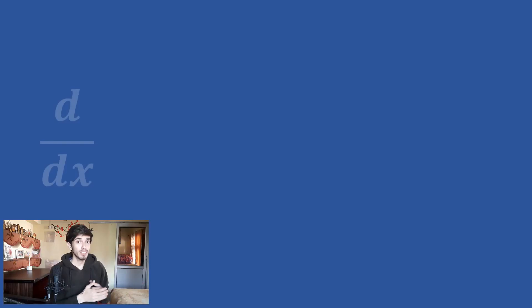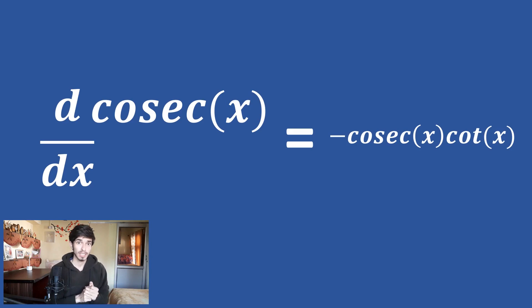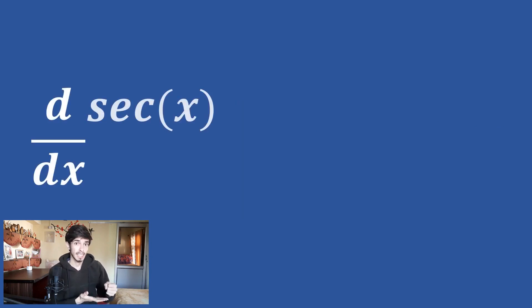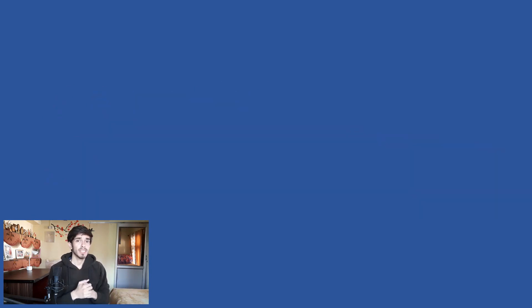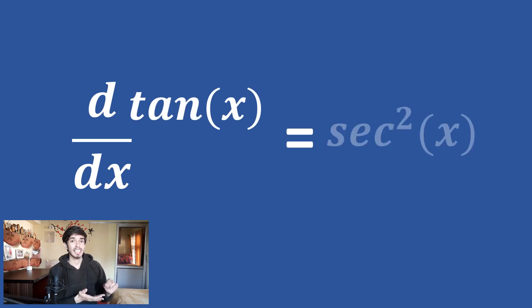Here are some important but somewhat more difficult formulas. Differentiation of cosec x is minus cosec x cot x. Differentiation of sec x is sec x tan x. Differentiation of cot x is minus cosec squared x. And differentiation of tan x is sec squared x. Here is a little tip: whenever there is a differentiation of a trigonometric function starting with the letter C, there is always a minus in the answer — for example, cos x gives minus sin x, cosec x gives minus cosec x cot x, and so on. This will help you remember where to put the minus sign.